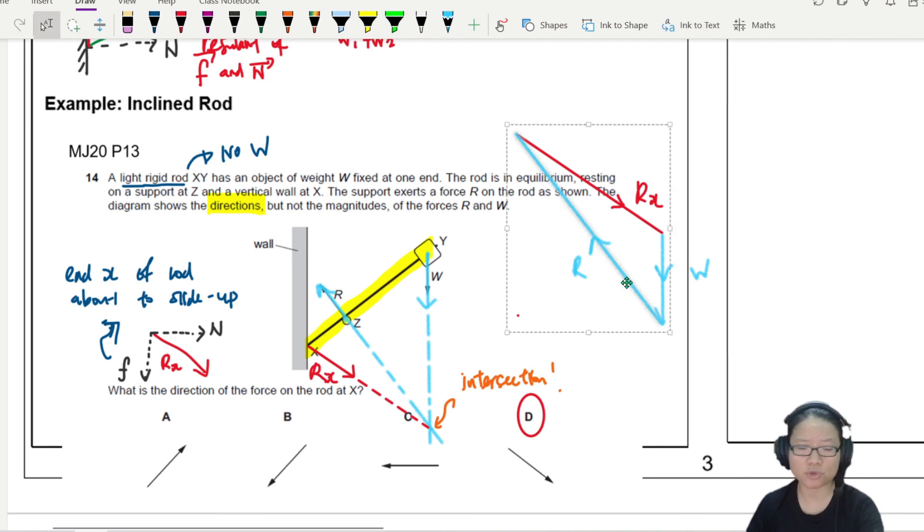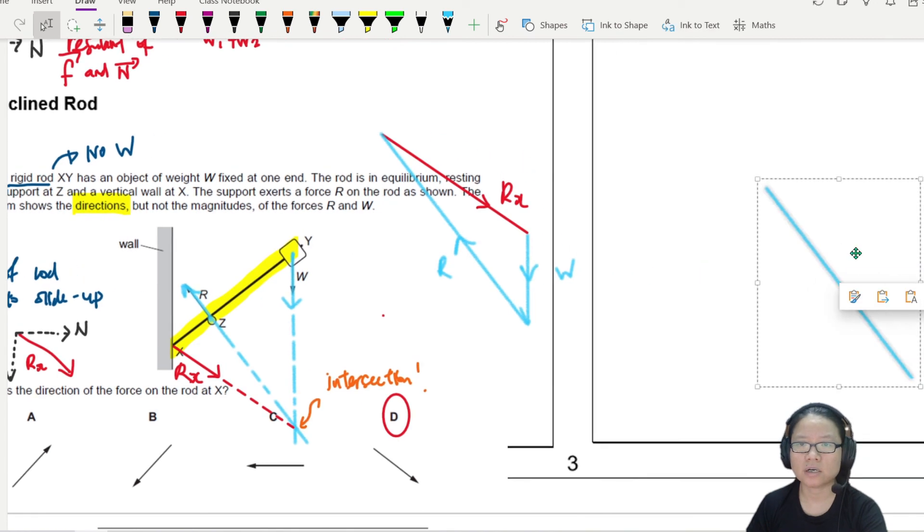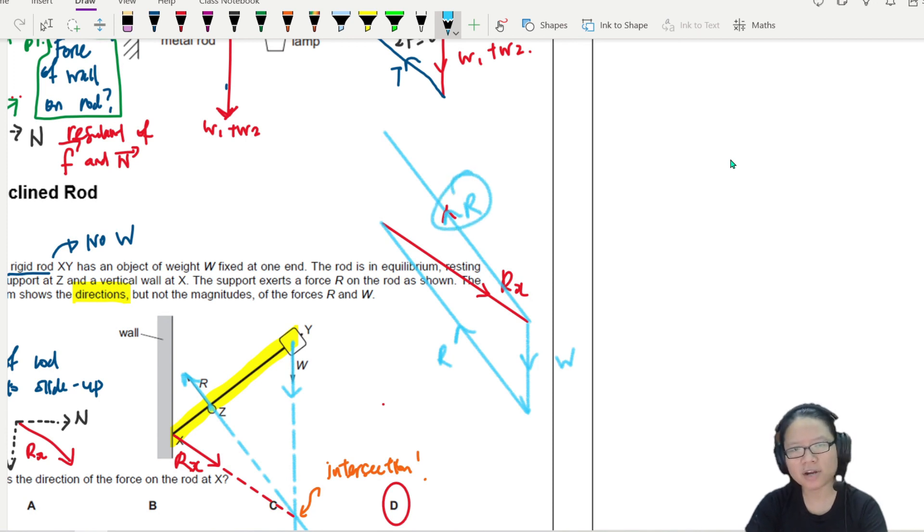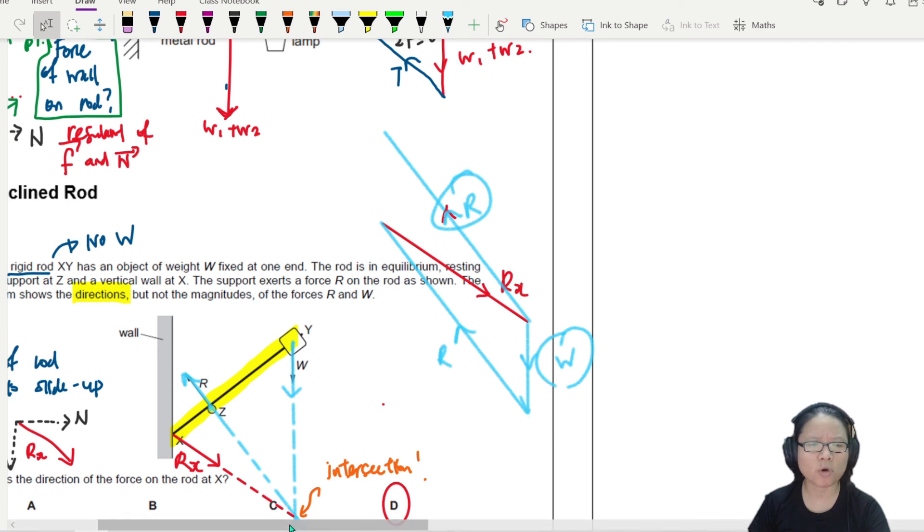The R is pointing away. If this R is pointing in this direction, then it cannot be right. Where's your cyclic triangle? R and W cannot be pointed in the opposite direction. It should be cyclic, one after the other. I think that's it for this one.